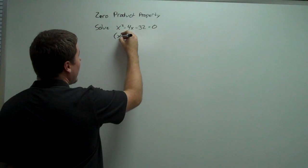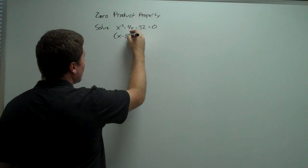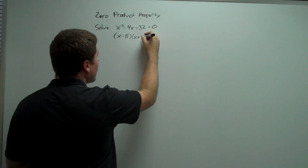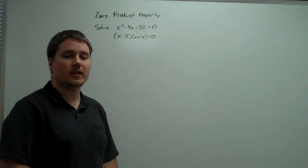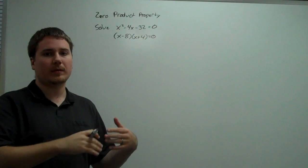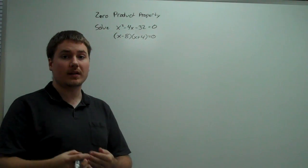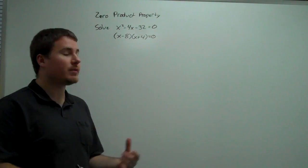So I set x minus 8 and x plus 4 equal to zero. Now we have the handy zero product property, which says that if you have two things multiplied equaling zero, you can individually set each equal to zero.